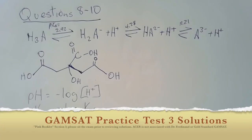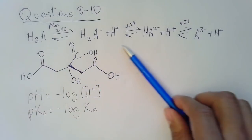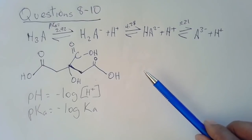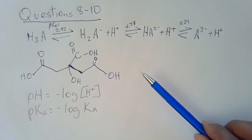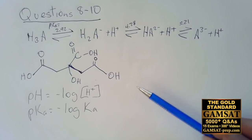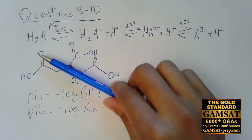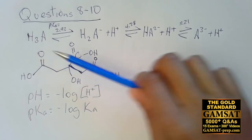As soon as I saw questions 8 to 10 I had a conniption — I couldn't even write the equation in the same way that ACER did, even though ACER did say it can be represented as the 3D protonations. The idea of writing an unbalanced chemical reaction is like going to the Louvre and seeing the Mona Lisa without a smile.